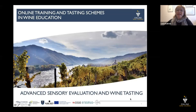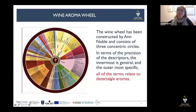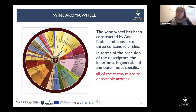Welcome to online training and testing schemes in wine education. We are in the section of advanced sensory evaluation and wine testing. We talk about the wine aroma wheel, which has been constructed by Ann Noble and consists of three concentric circles. In terms of the precision of the descriptors, the innermost is general and the outermost specific. All of the terms relate to detectable aromas.